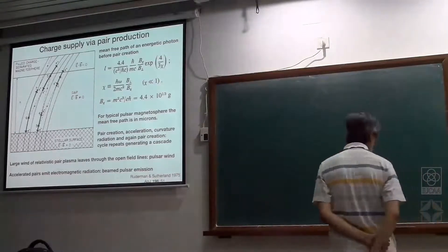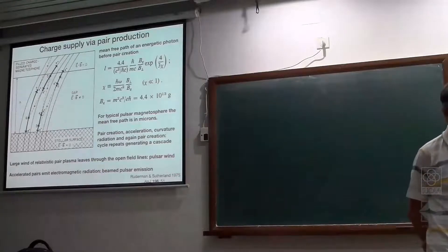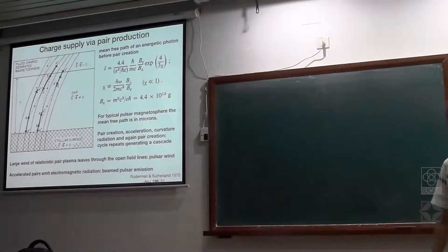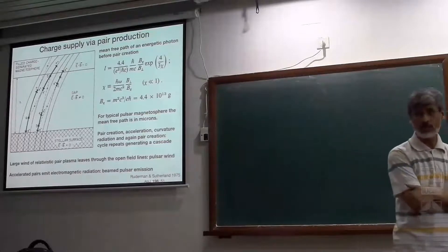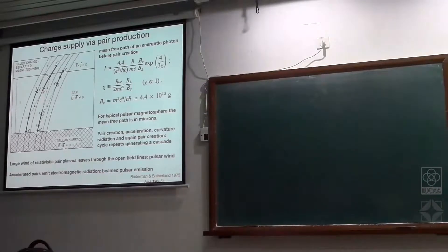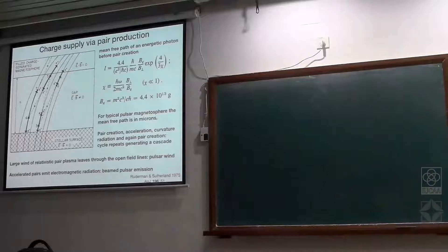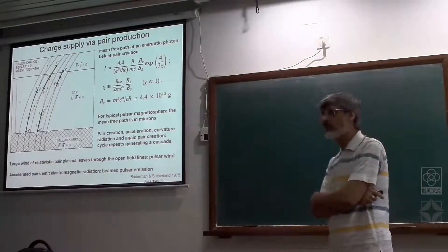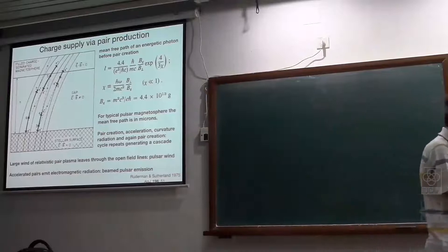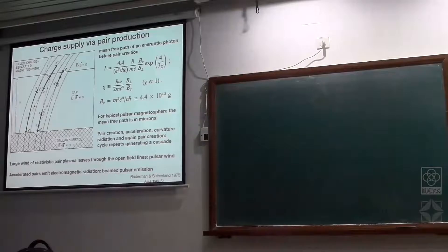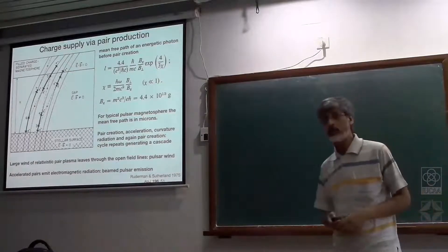In the force-free limit, the Goldreich-Julian charge density is populated, but the number density of charges could be much larger than the net charge density. It is only the difference between the number densities of the two signs that gives the Goldreich-Julian charge density, so multiplicity could be very large. This pair plasma operating on the open field lines can then escape, populate the nebula around the pulsar, and produce the pulsar wind nebula emission that we observe.